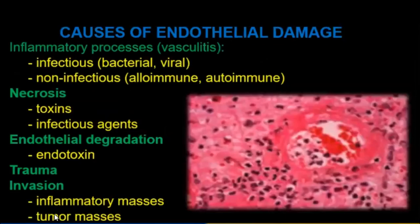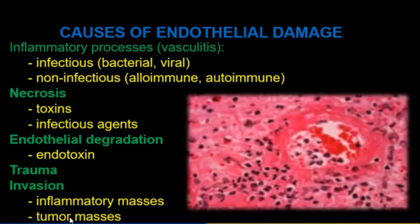Causes of endothelial damage include: inflammatory processes such as vasculitis (inflammation of vessels), infection and non-infection reasons, necrosis, toxins, infection against endothelial degradation (e.g., endotoxin influence), trauma, inversion, inflammatory masses, and tumor masses.